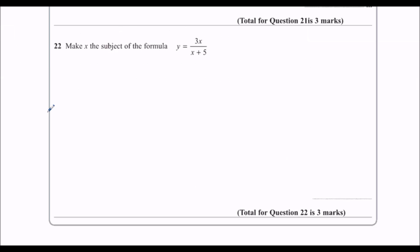Make x the subject of the formula, so we need to make this x equals. So the first thing we're going to do is we're going to get rid of the fraction, so I'm going to multiply both sides by this x plus 5, so x plus 5 equals 3x.